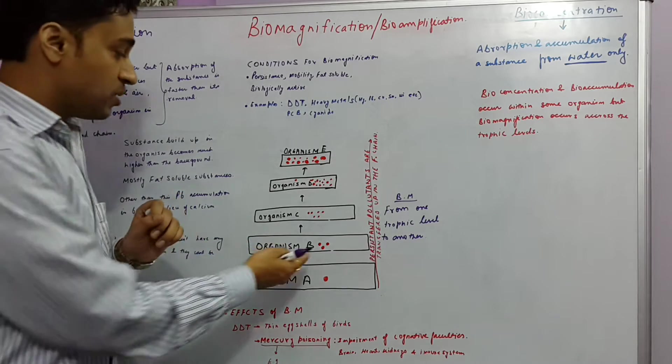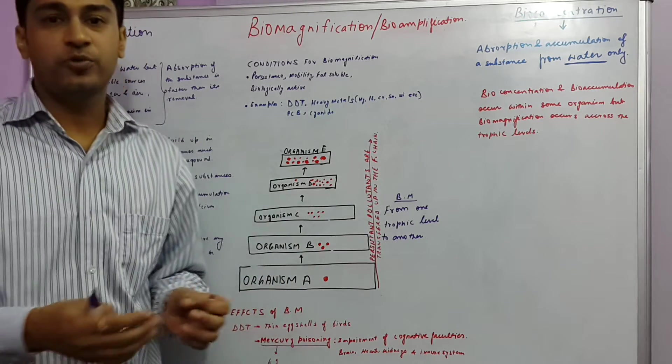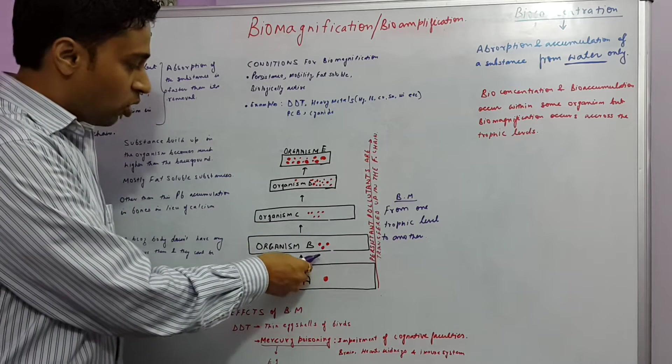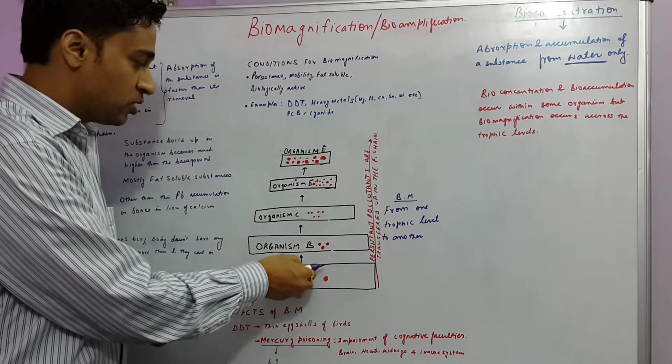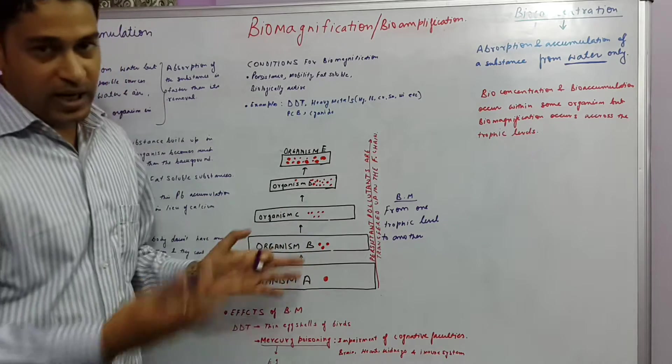And please remember, organism B would not eat just one A. It would eat several A's. So the concentration of the persistent pollutant would increase to a very large extent in B.